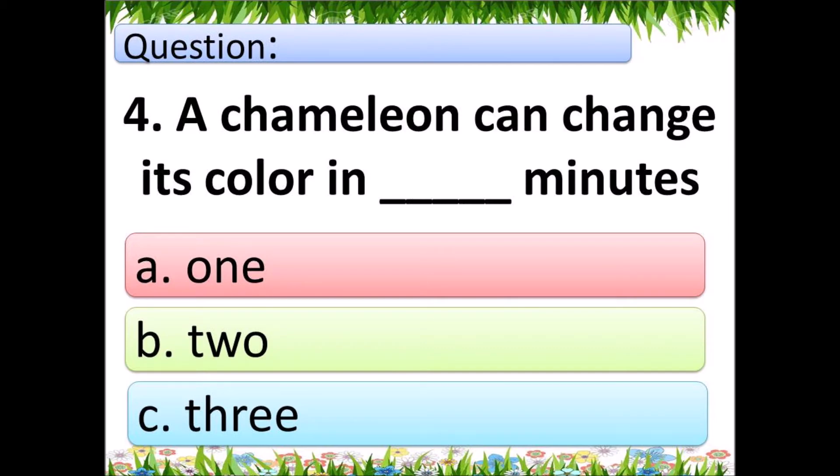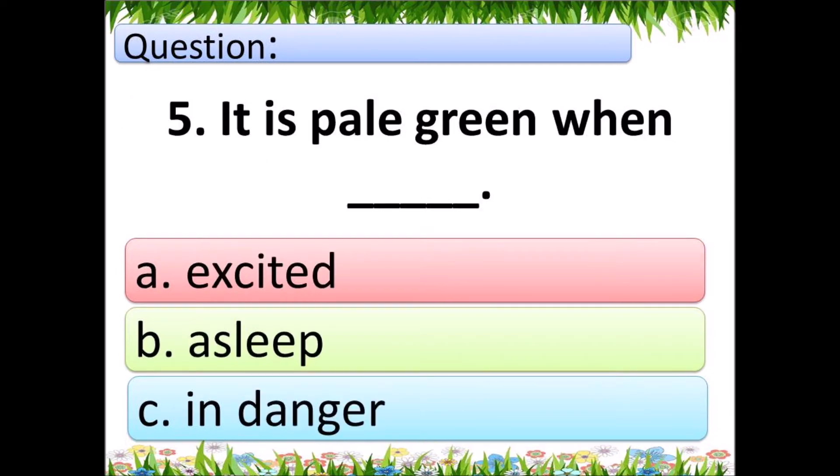Question 4: A chameleon can change its color in how many minutes? A: 1, B: 2, C: 3. Question 5: It is pale green when what? A: excited, B: asleep, C: in danger.